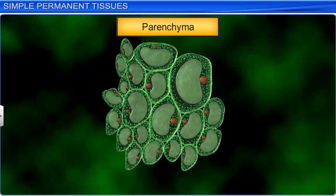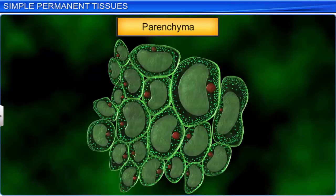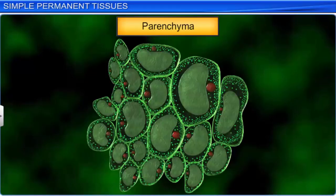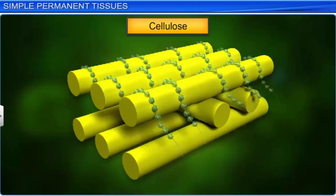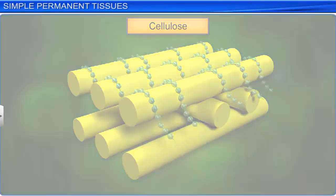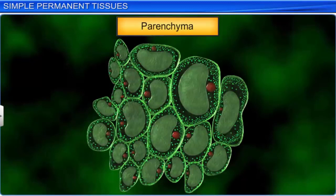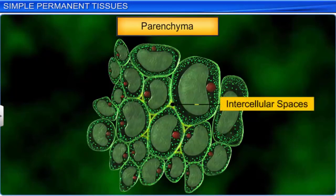The cell walls of parenchyma are thin and made up of cellulose. Parenchymatic cells may be closely packed or have small intercellular spaces between them. The second type of simple permanent tissue is colenchyma. It is found in the layers below the epidermis of dicotyledonous plants. This layer is either homogenous or in patches. Colenchyma provides mechanical support to the growing parts of a plant, such as a young stem or the petiole of a leaf.